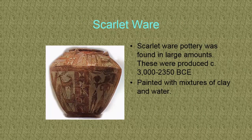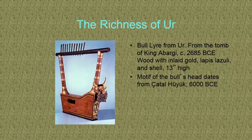Just to give you an idea of the ceramics: here's an image of scarlet ware pottery, dated to 3000–2350 BCE. It's interesting to notice the geometric figures on the bottom — when we start looking at Greek vases you're going to see some parallels in the way the figures are depicted.